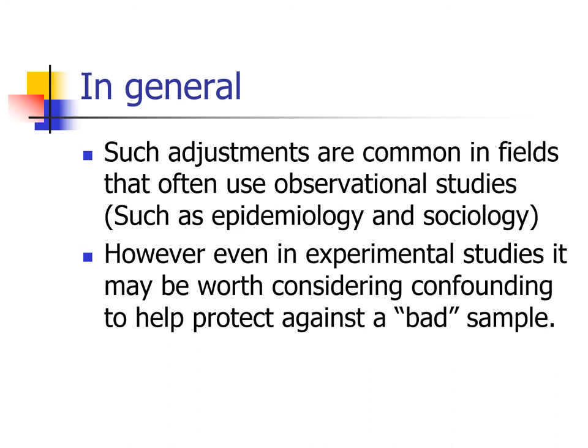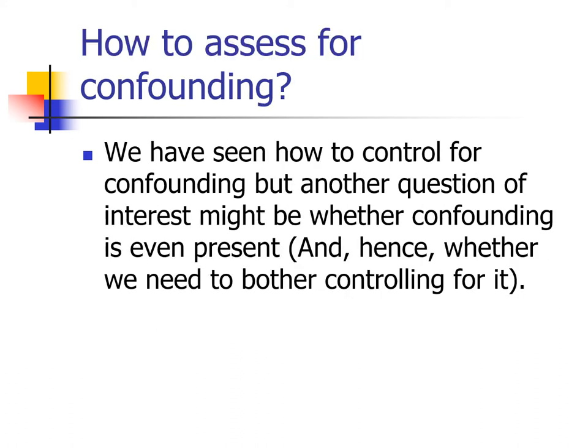Such adjustments are common in fields that use observational studies, so confounding is most often a problem in epidemiology, sociology, and economics. It's also worth considering even in experimental studies, because controlling for confounders can help protect against a bad sample. But how do we actually assess whether confounding is present or not? We know how to control for it, but that's putting the cart before the horse if it doesn't even need to be controlled for.